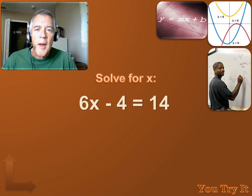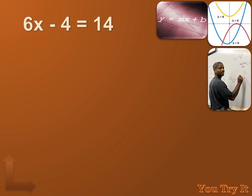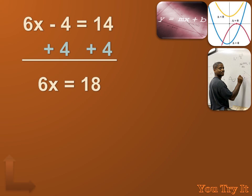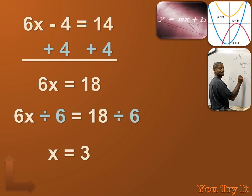Now you try this one — hit the pause button, do the problem, and then hit the forward key to move on to the answer. To solve 6X minus 4 equals 14 for X, I need to isolate X. That means getting rid of the 6 being multiplied by X and the 4 being subtracted. I get rid of the subtraction first, so I add 4 to both sides, giving me 6X equals 18. Then I divide both sides by 6 to isolate X, and discover that X equals 3.